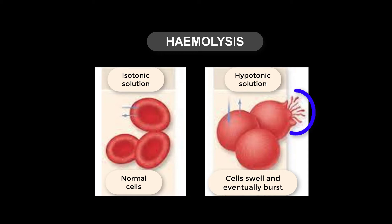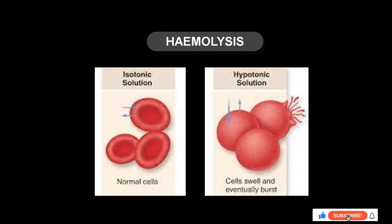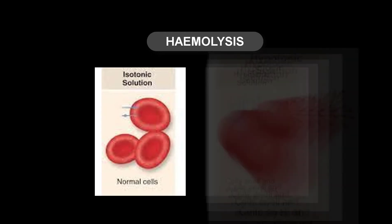Do you know the reason why they are bursting? They are bursting because they only have the cell membrane — they don't have a cell wall. The cell membrane they have is very soft and cannot withstand the pressure generated by absorbing too much water. That process whereby they burst is referred to as hemolysis.